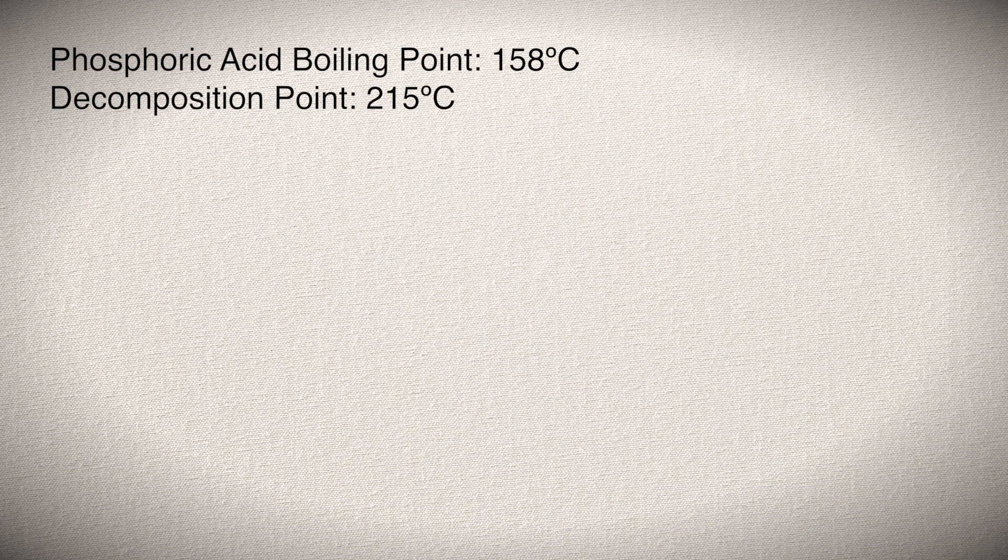Also, the boiling point of phosphoric acid is 158 degrees Celsius, which is a pretty significant temperature to retain throughout the first bits of glassware in a distillation apparatus. Once the temperature exceeds 215°C, which I allowed it to in my first run, the phosphoric acid can decompose or polymerize.